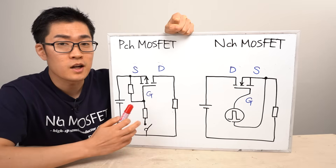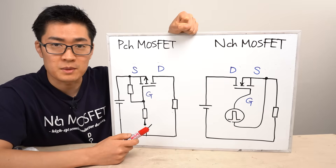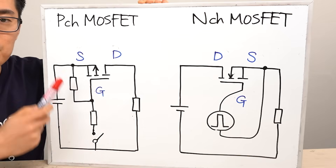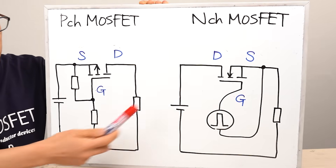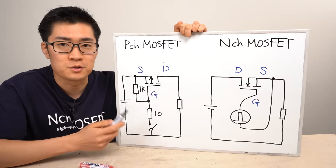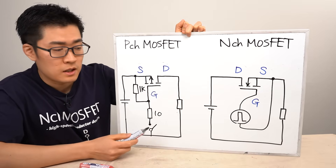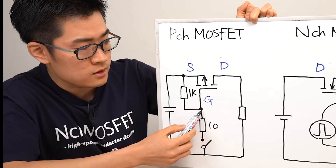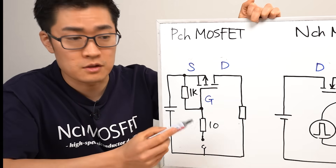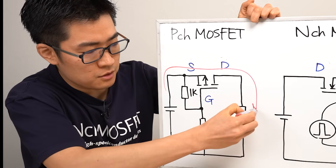There are many ways to configure a load switch circuit, but today we'll focus on a few examples. Here's one of the simplest configurations. On the left we have a P-channel MOSFET setup, and on the right a configuration using an N-channel MOSFET. Let's begin by looking at how the P-channel circuit works.